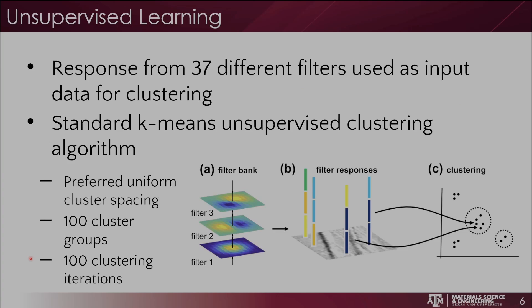Starting with unsupervised learning, the data was filtered using 37 different filters as input data for clustering. These filters detect things like blobs and streaks — basic visual features that can be used to cluster around. The standard k-means unsupervised clustering algorithm was then used to cluster the filter responses into 100 different cluster groups, with preferred uniform cluster spacing and 100 clustering iterations.